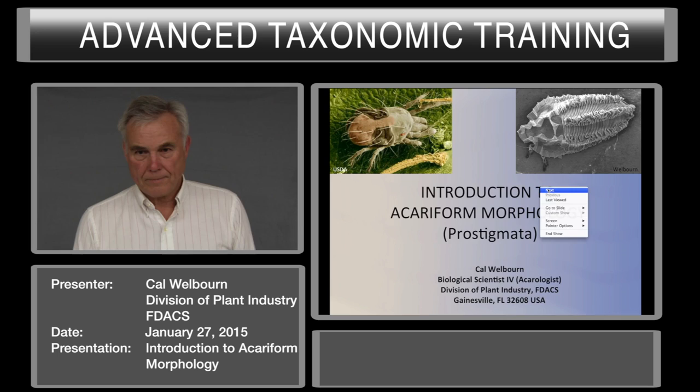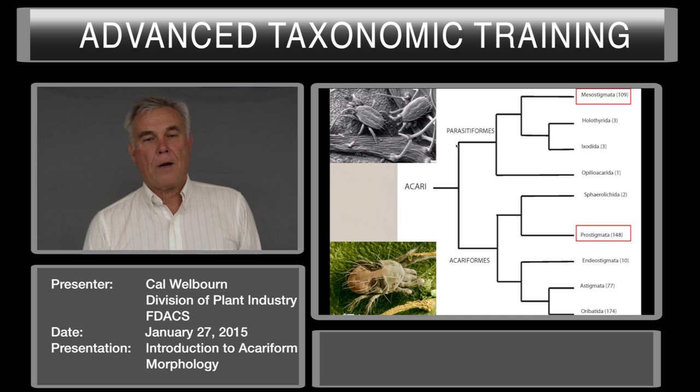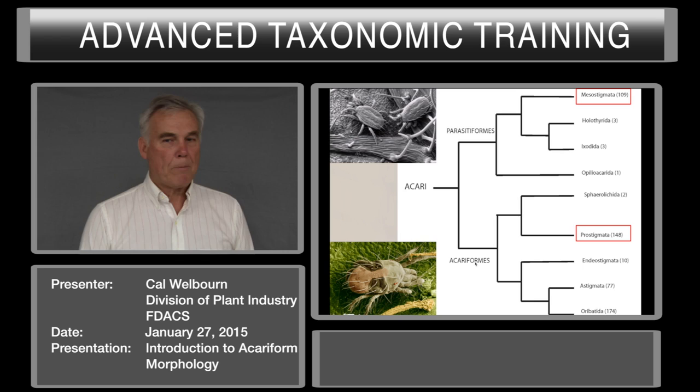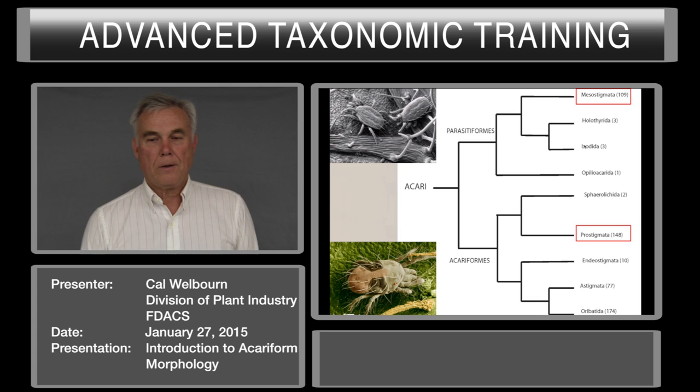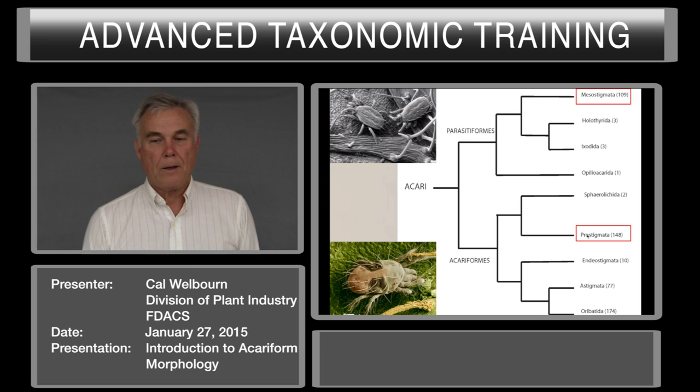The Acariformes, if it is monophyletic, is divided into two main groups: the Parasitiformes and the Acariformes. As far as mites associated with plants, we're concerned with only two major groups: the Mesostigmata and the Prostigmata. While the other groups may occur on plants, they are not of economic importance. For this talk, we're going to focus mainly on the Prostigmata, because this is where our plant-feeding mites occur.